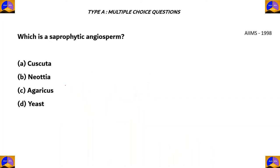The next question says: which is a saprophytic angiosperm? Our options are A. Cuscuta, B. Neottia, C. Agaricus, D. Yeast.